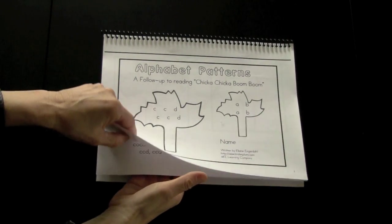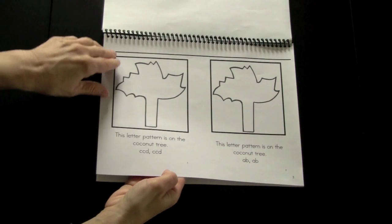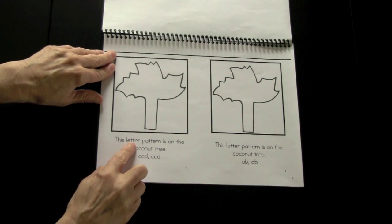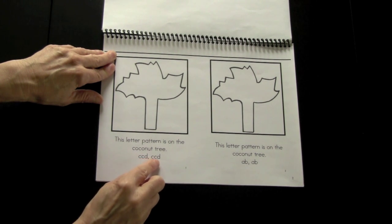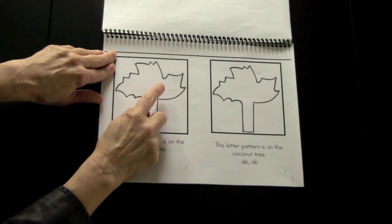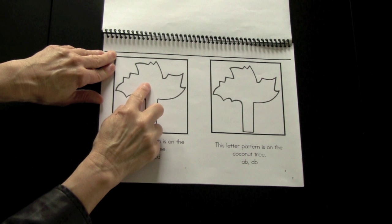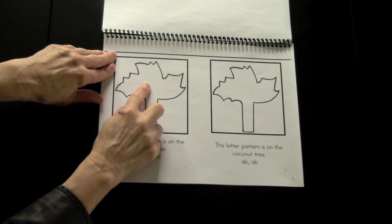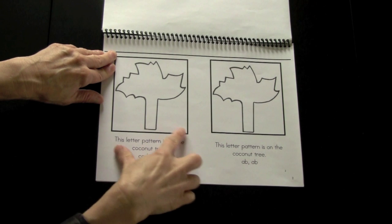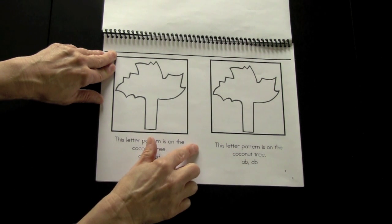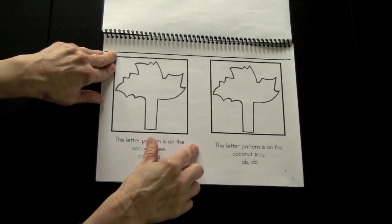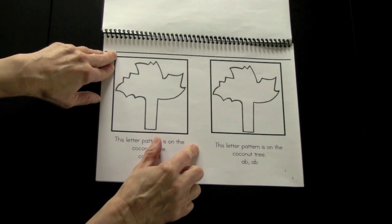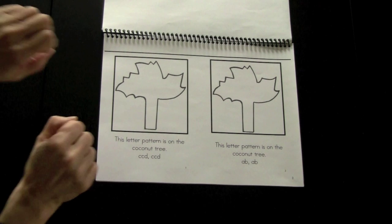I'm going to demonstrate how the reader follows. This letter pattern is on the coconut tree: CCD, CCD. The children will be required to stamp that pattern, or they could cut and paste the letters provided. The whole reader goes through the different alphabet patterns, trying to develop this skill further. You will find other activities that help develop this skill found within the lesson plans.